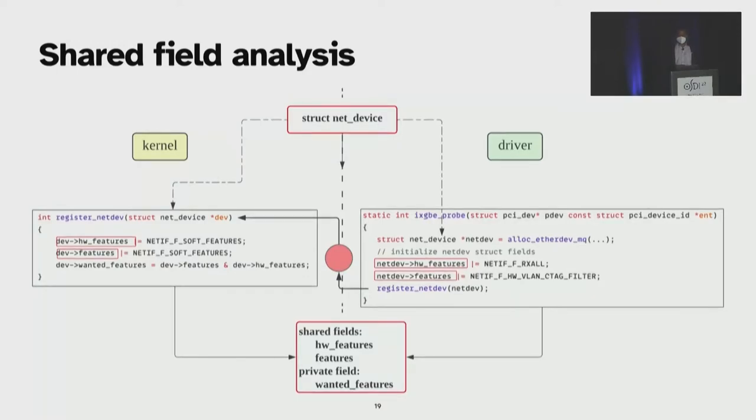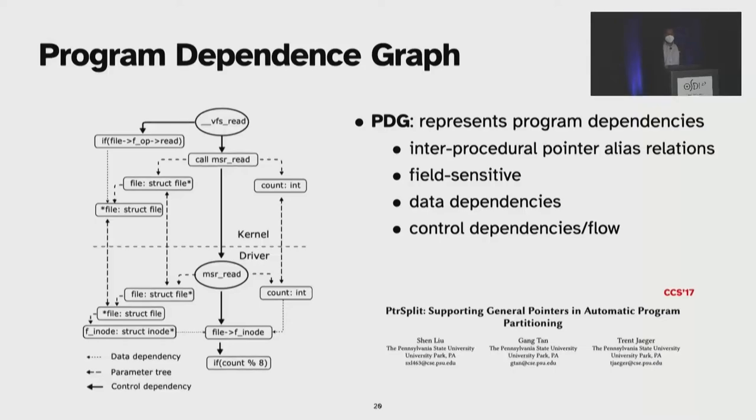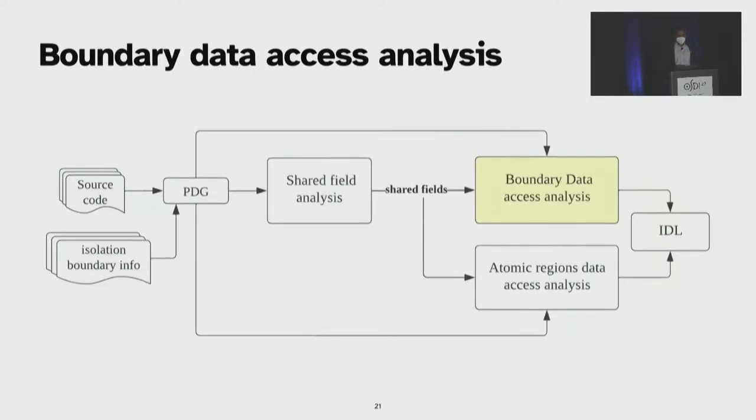Though this looks trivial, there may be aliases where struct netdev is passed through different functions and accessed through multiple aliases. To address that, we perform interprocedural analysis to determine the shared fields, for which we rely on program dependence graph. First, we build a PDG for the driver domain and for the kernel domain. From the PDG, we will be able to analyze interprocedural data using field-sensitive alias analysis and infer control and data dependencies for a given variable. For more details on how PDG works, please refer to the original PDG paper from CCS17.